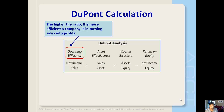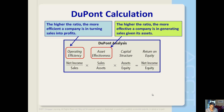The second component is a company's effectiveness at using its assets. It is calculated as sales divided by assets. This ratio is commonly known as the asset turnover ratio. It measures the ability of a company to generate sales from its asset base. The higher the ratio, the more effective a company is in generating sales given its assets.